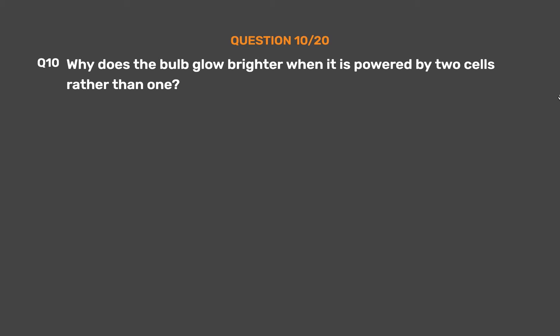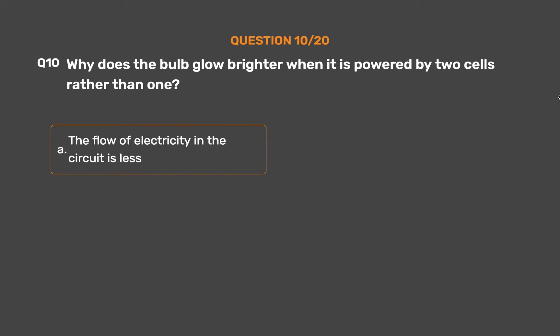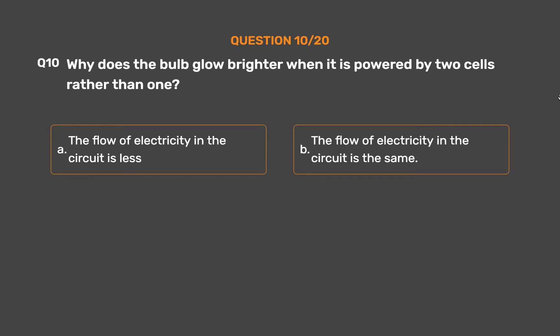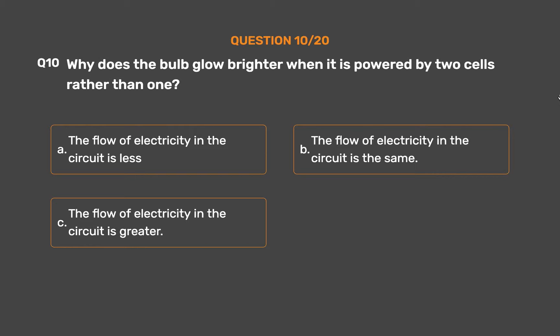Question number 10. Why does the bulb glow brighter when it is powered by two cells rather than one? Option A: The flow of electricity in the circuit is less. Option B: The flow of electricity in the circuit is the same. Option C: The flow of electricity in the circuit is greater. Option D: The flow of electricity fluctuates.